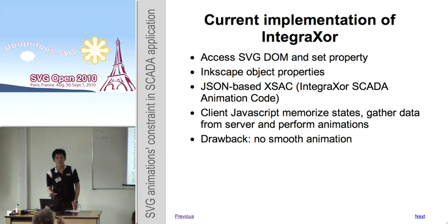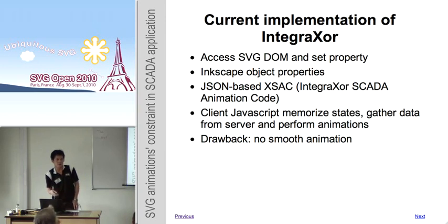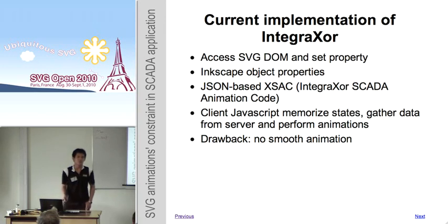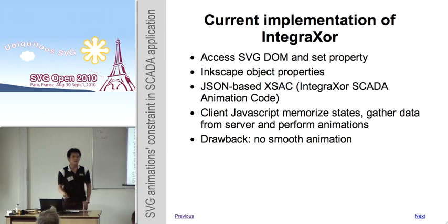This EXEC code is stored into the SVG file as an attribute. When this SVG file is opened on the client side, the JavaScript engine starts gathering data from the server and performs the animation according to the configuration set. However, there is a small drawback: we cannot achieve smooth animation.